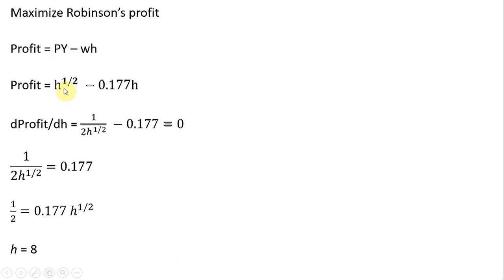H raised to the 1.5 power. W, the wage we found on the last screen, would be 0.177, and that's multiplied by H. So let's take the derivative of the profit function with respect to hours of work, the choice variable. Set that result equal to 0. Moving some things around, and then solving for H, H equals 8.